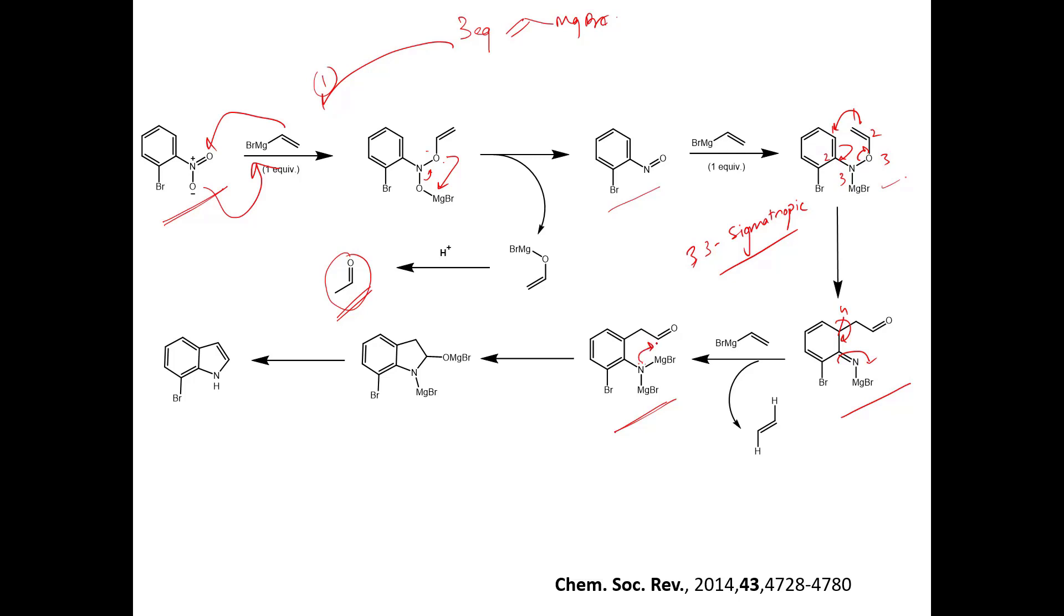Now this nucleophile of nitrogen will attack here, it will take this magnesium bromide to form this, which under acidic workup with H+ will give 7-bromo indole. We are starting from 2-bromo nitrobenzene and getting 7-bromo indole. So this is actually known as Dobs modification of Bartoli indole synthesis.